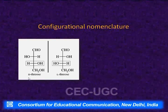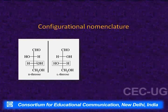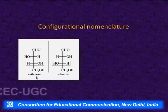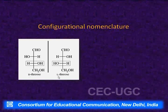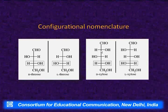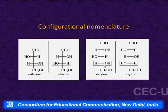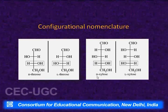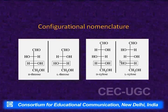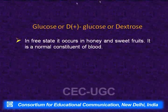For example, in threose: the isomer with the hydroxyl at the lowermost asymmetric carbon on the right is D-threose, and on the left is L-threose. Similarly for xylose, which has three asymmetric carbons: the isomer with hydroxyl on the right at the lowermost asymmetric carbon is D-xylose, and on the left is L-xylose.